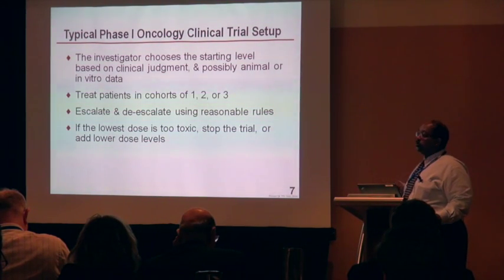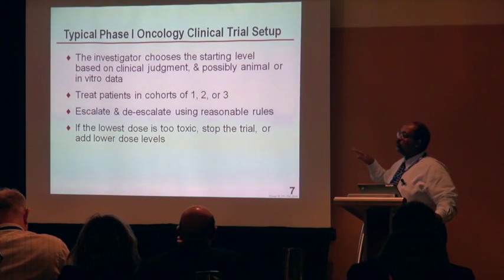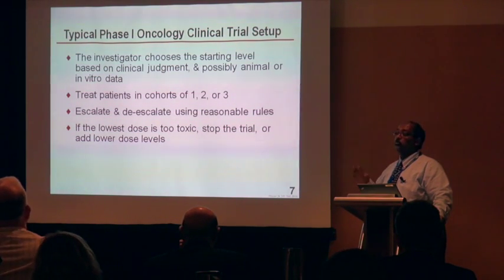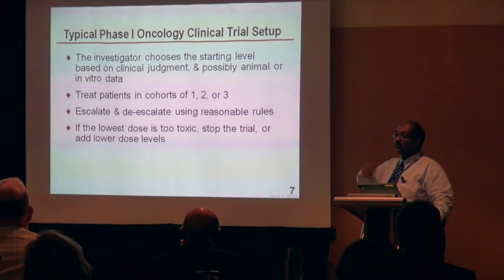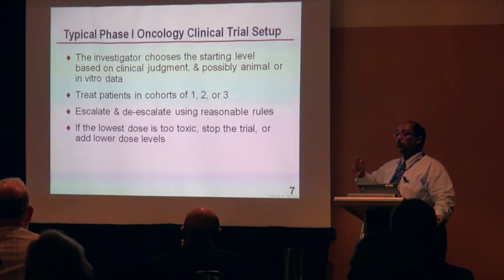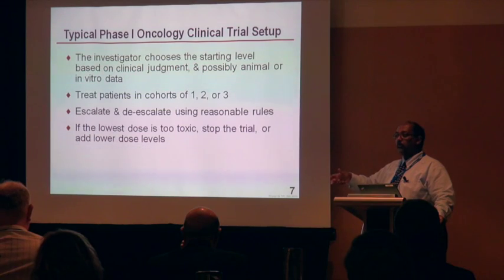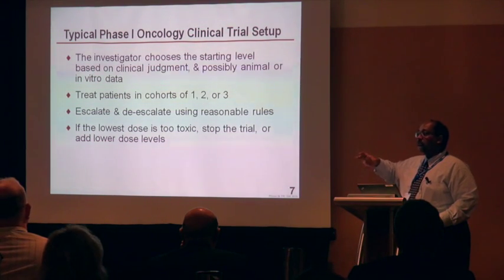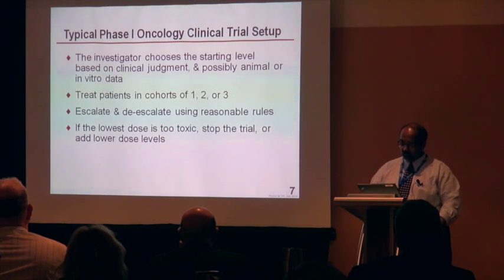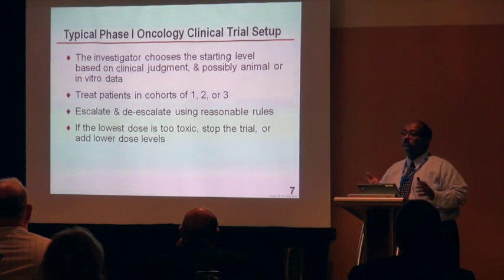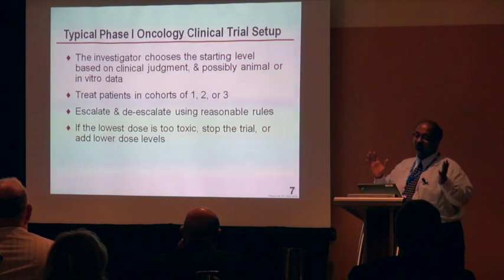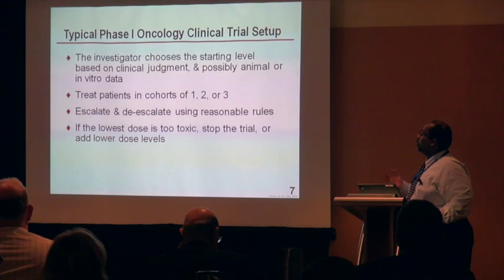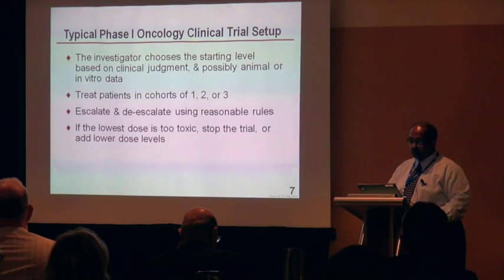We decide to escalate or de-escalate using reasonable rules. With up-and-down methods like the 3-plus-3, that's an algorithmic approach — if you see this, then you do this. With a model-based approach, you estimate parameters and then apply a decision rule. With an algorithmic design, you go by what you've observed in a particular patient or group. Both are reasonable. If the lowest dose is too toxic, you can either stop the trial or add lower doses — I've seen both in my experience.